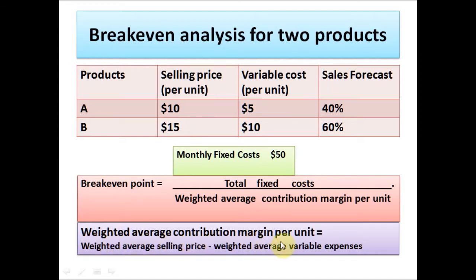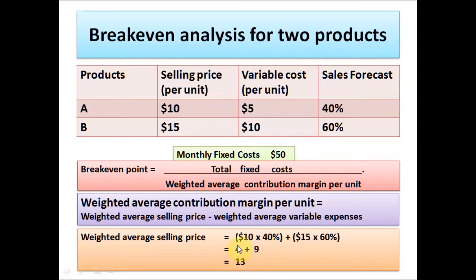The formula to calculate the weighted average contribution margin per unit is: you take the weighted average selling price and minus the weighted average variable expenses. So the first step is to calculate the weighted average selling price. For product A, you take the selling price of $10 per unit times 40% sales forecast, which gives 4. For product B, the selling price is $15 per unit times 60% sales forecast, giving 9. So 4 plus 9 gives a weighted average selling price of $13.